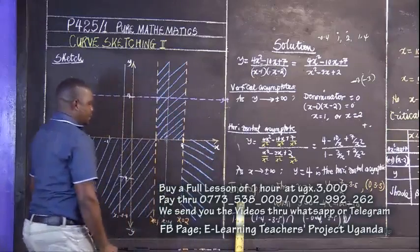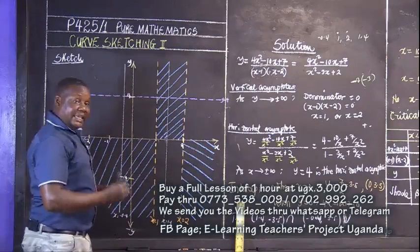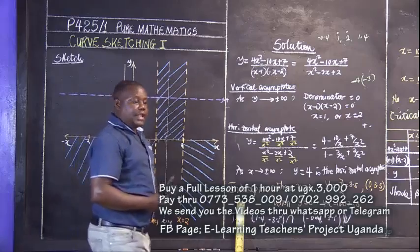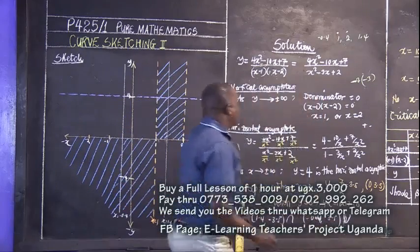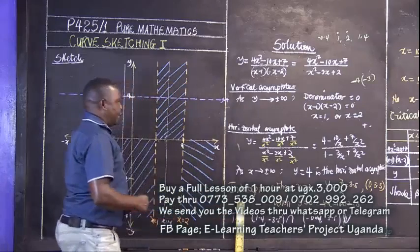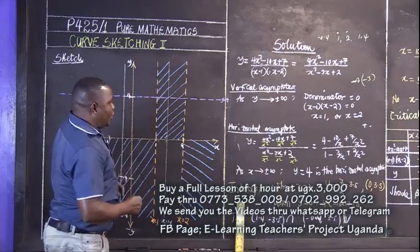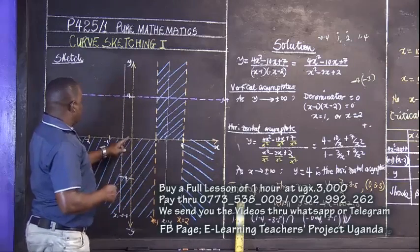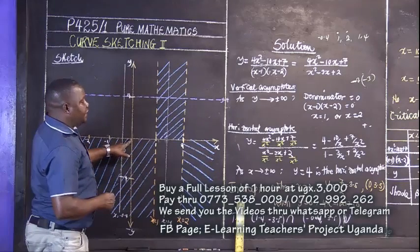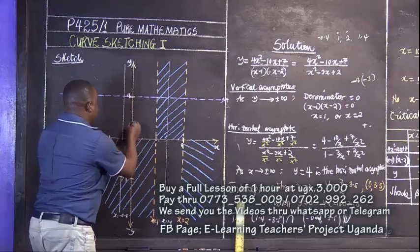After doing that and ascertaining that we are good to go, now it's very important for us to also look at the intercepts and the turning points. Our intercepts, we only had when x was 0. When x is 0, we have it here: y is 3.5. 3.5 is up here.